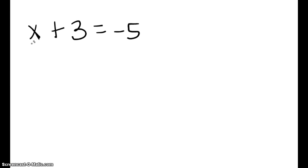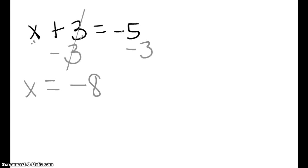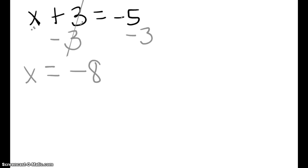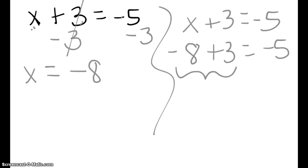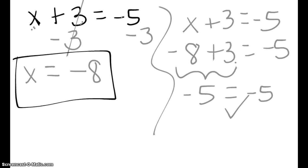x plus 3 equals negative 5. I'm worried about the left side of the equation. I have added 3 positives, so the inverse is to add 3 negatives or subtract 3. Those zeroed out. x equals negative 5 and negative 3, which is negative 8. Let's rewrite the equation: instead of x plus 3 equals negative 5, we substitute negative 8 plus 3 equals negative 5. What is 3 positives and 8 negatives? Five negatives. Does that balance out with five negatives? Yes, it does. Go back and box your final answer.